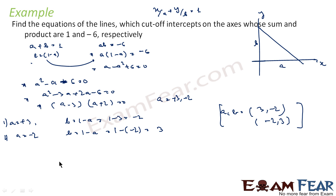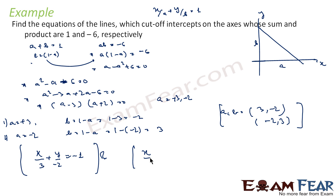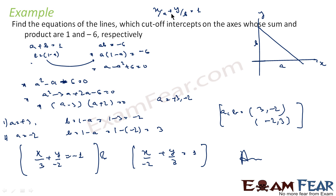We have two values, so we will have two equations. X/3 plus Y/(minus 2) equals 1 is one equation, and X/(minus 2) plus Y/3 equals 1 is another equation. We were told AB equals minus 6 and A plus B equals 1, found A and B, and got both equations using X/A plus Y/B equals 1.